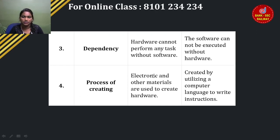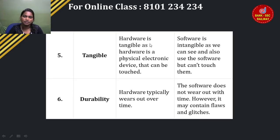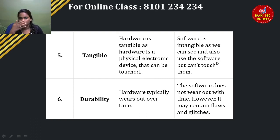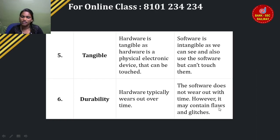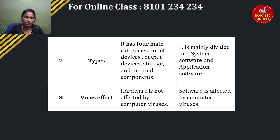Hardware is created from electronics and other materials. Software is intangible — we can see and use software, but it cannot be touched. Hardware is a physical electronic device that can be touched — it is tangible. Software is intangible. Regarding durability: hardware typically wears out over time. Software contains flaws and glitches; we can update the apps.